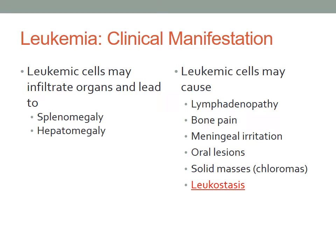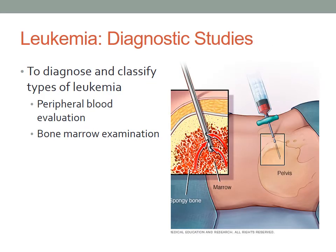Leukostasis may also occur. This is a life-threatening complication caused by a high leukemic white blood cell count in the peripheral blood, which causes the blood to become thickened and blocks the circulatory pathways. Identifying the type of leukemia is important because the various types have different prognoses and chemotherapeutic regimens.